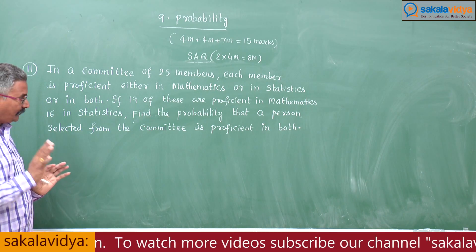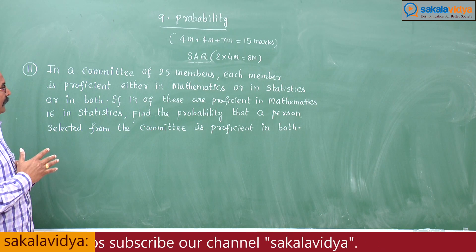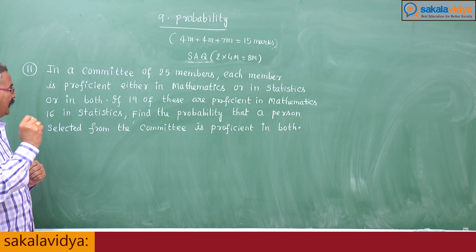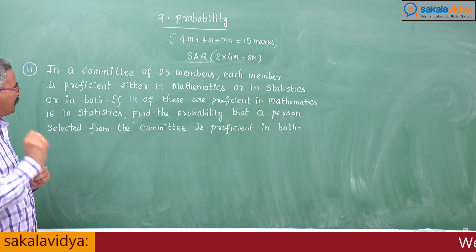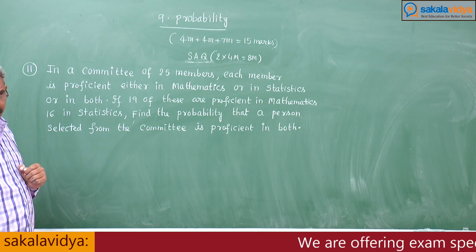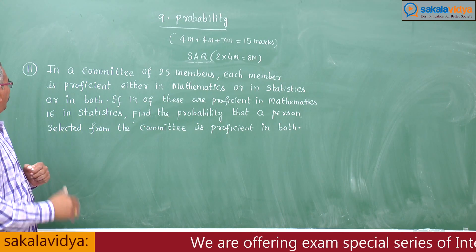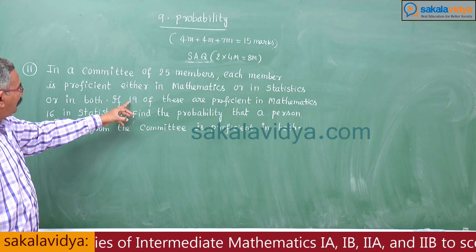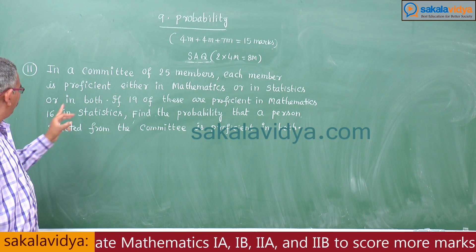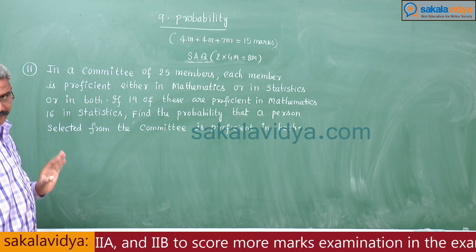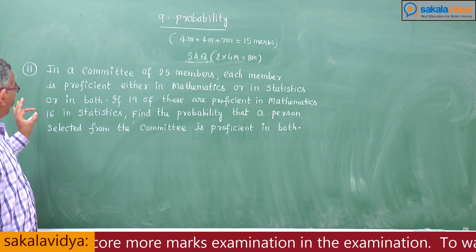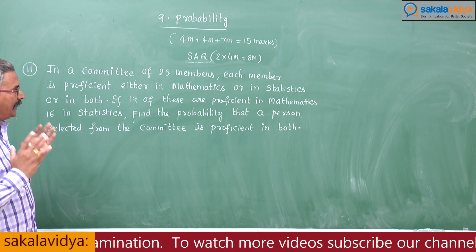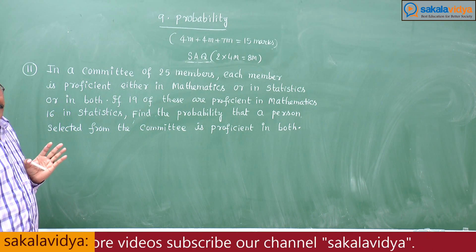Let M and S be the events that each member is proficient in mathematics and statistics respectively. Here, n(M ∪ S) is given as 25, n(M) is equal to 19, n(S) is equal to 16. We have to find p(M ∩ S).